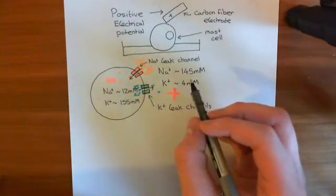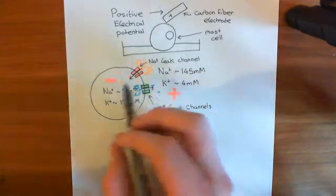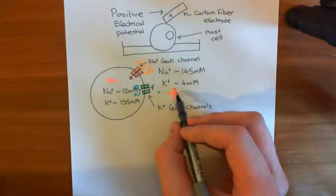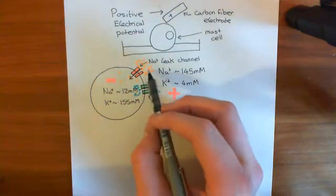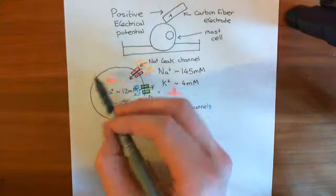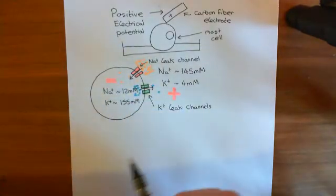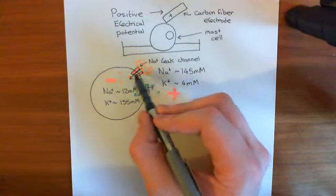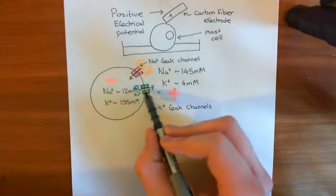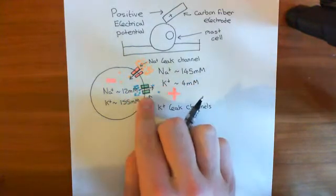What we have to factor in is, as this electrical potential difference builds up — as you continue moving net positive charge out — this electrical potential difference is going to keep building up. You've got a positive electrical potential outside and a negative electrical potential inside. The problem is that both sodium and potassium are positively charged ions, so they're both going to want to be in the compartment with the lower electrical potential, which is now the intracellular compartment. So that's going to increase the probability that sodium ions move in, and it's going to decrease the probability that potassium ions move out.